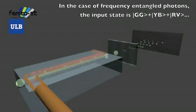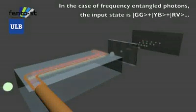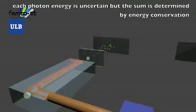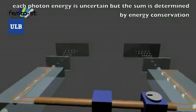In the case of frequency-entangled photons, the input state is the superposition of green-green, yellow-blue, and red-violet. Each photon energy is uncertain, but the sum is determined by energy conservation.